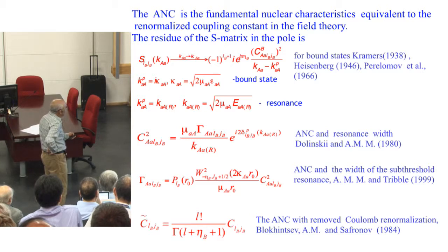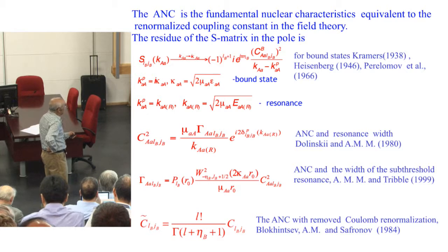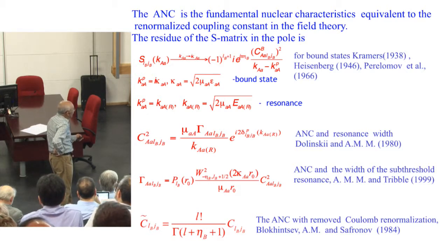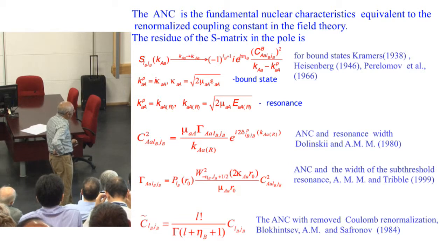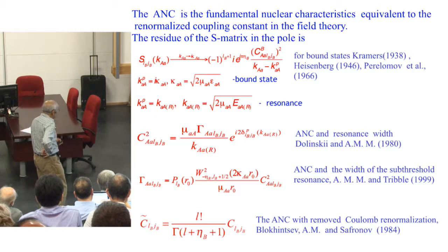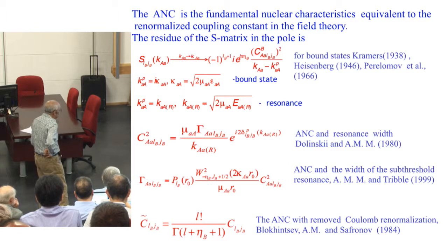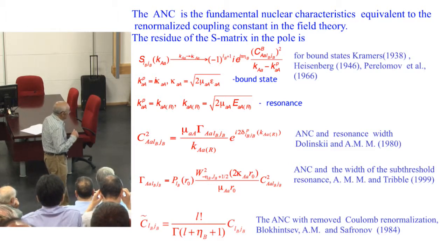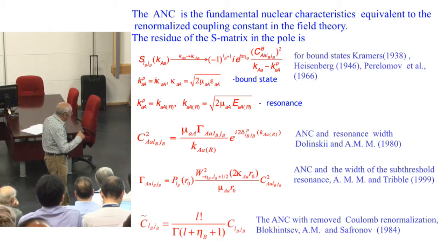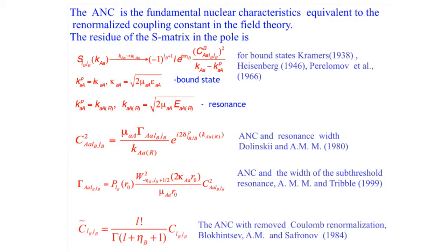For resonances, ANCs can be expressed in terms of resonance partial width. So for resonances, ANCs are directly observable from experiments. This connection between ANC and the resonant width was done by me and Dolinsky in 1980. Mu is the reduced mass, k is the resonant momentum, and this is the potential scattering phase shift. The connection between ANC and sub-threshold resonance width is for bound states located very close to the threshold. The tail of this bound state wave function can be seen in the continuum. In this case, a bound state works as a resonance, and this was found in 1999 with Bob Tribble in our paper.